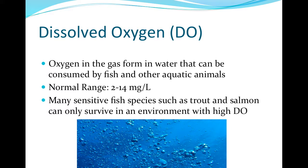Dissolved oxygen is critical because aquatic organisms are dependent on it. Typical dissolved oxygen levels in water range from 2 to 14 mg per liter, and fluctuate over the course of the day due to photosynthesis occurring in the stream. Reductions in dissolved oxygen occur due to an increase in temperature and increase in organic matter decomposition caused by algal blooms. Many sensitive species of fish, such as trout and salmon, can only survive in environments with high dissolved oxygen concentrations.